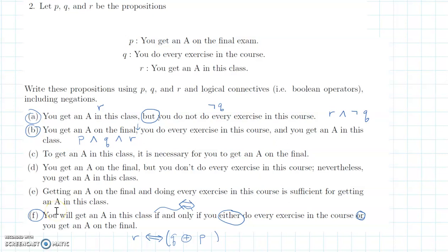That's all I wanted to cover in this video. The next one is going to be all about truth tables — we'll look at all the logical operators we used: negation, conjunction, disjunction, exclusive or, implication, and biconditional, and examine when a compound proposition is true and when it is false.